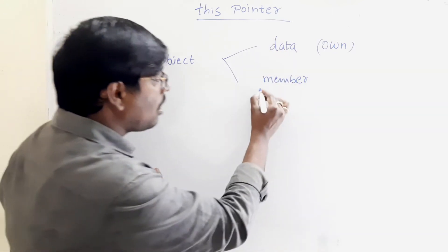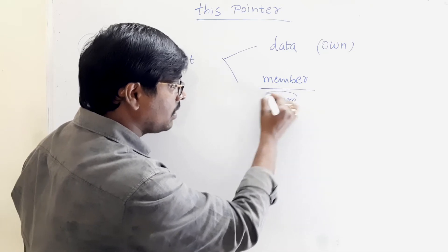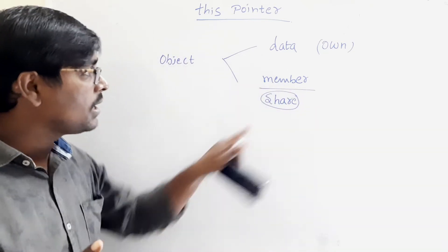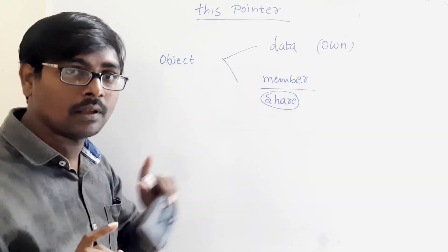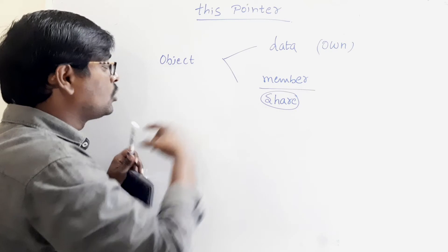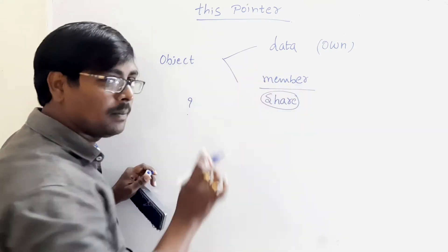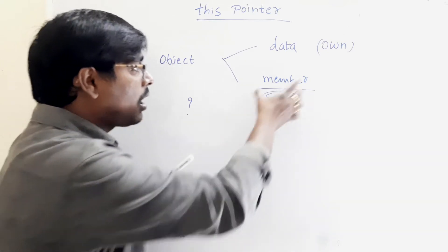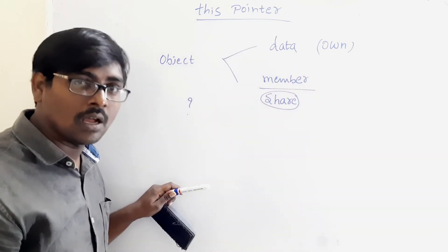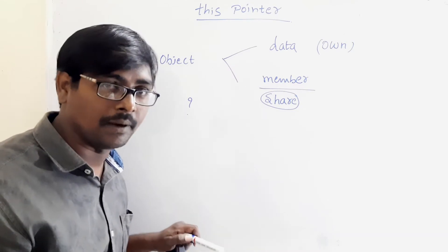But, all the objects share a common memory. All the objects share a common memory for member functions. Now, the question is, if all the objects share a common memory, that means common member functions, how are the data members properly updated.